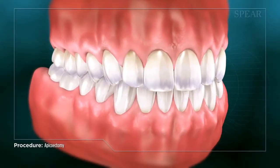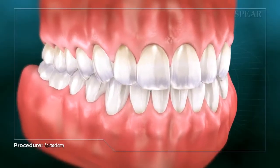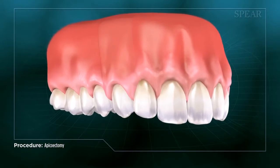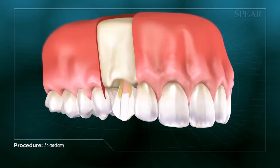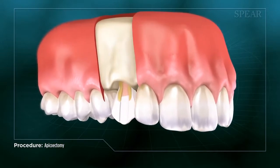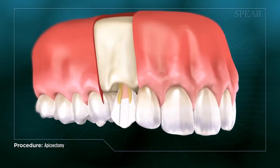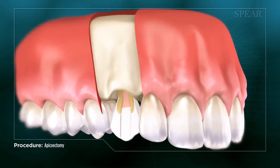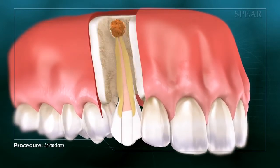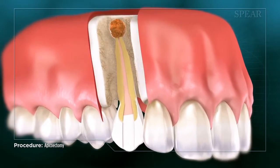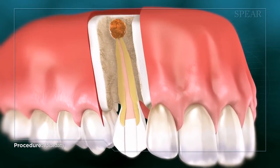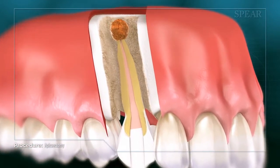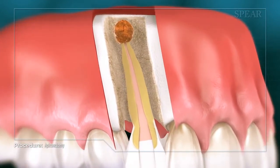Sometimes, even after endodontic treatment, more commonly known as a root canal, has been performed on a tooth, there can be a residual infection remaining at the end of the root. In such a case, your doctor may recommend a procedure called an apicoectomy be done to remove the infected area.